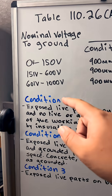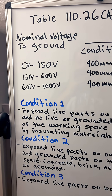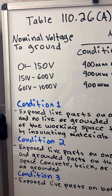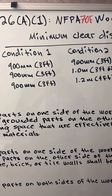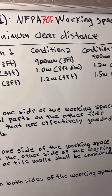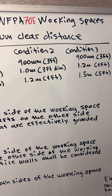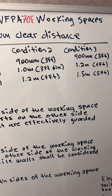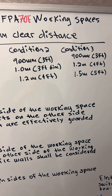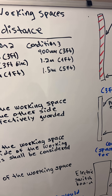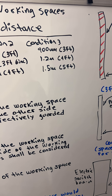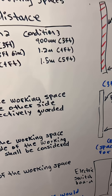And for 601 volts to 1,000 volts: condition 1 is 3 feet, condition 2 is 1.2 meters or 4 feet, and condition 3 is 1.5 meters or 5 feet.